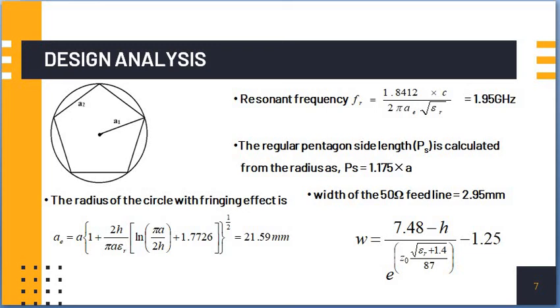The value of the radius, the fringing radius of the circle is 21.59 mm. But after certain reduction for generating both the bands, it is 20.58. So the resonant frequency without slits and slots of this pentagon patch is 1.95 GHz.